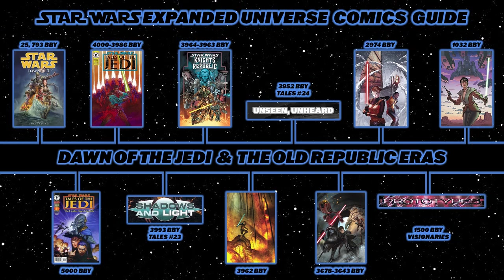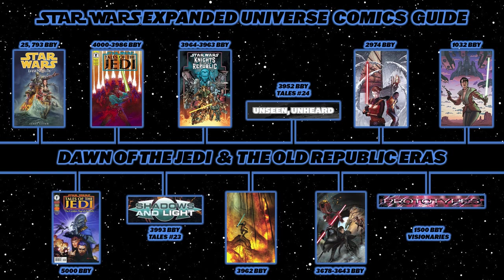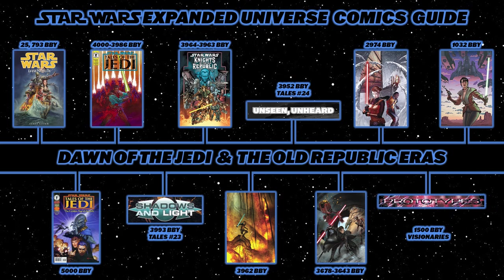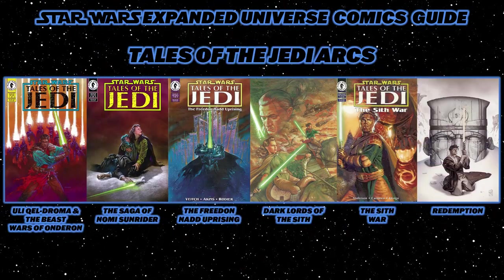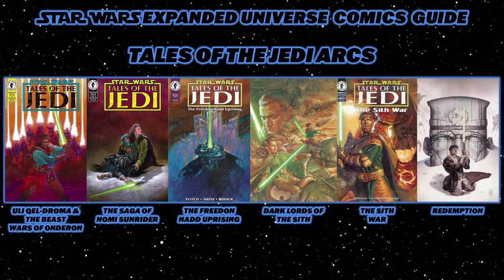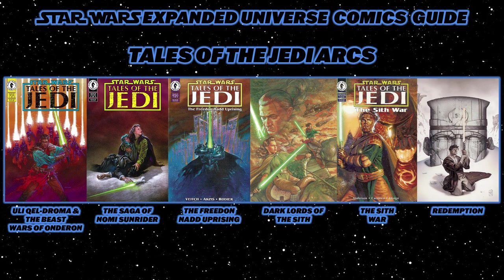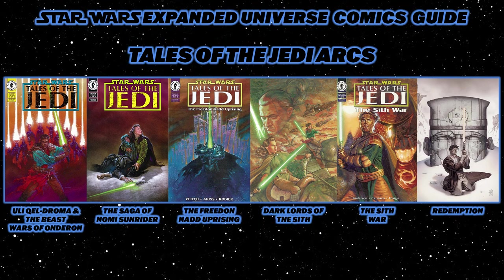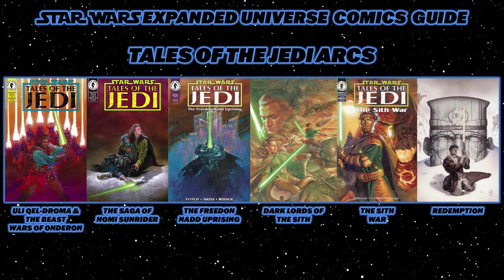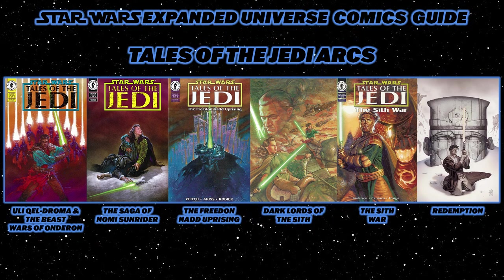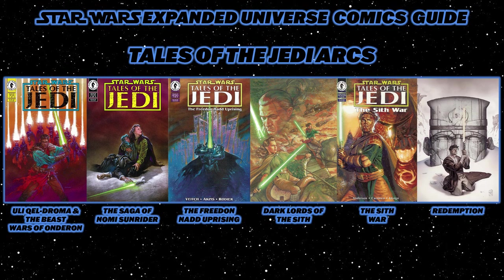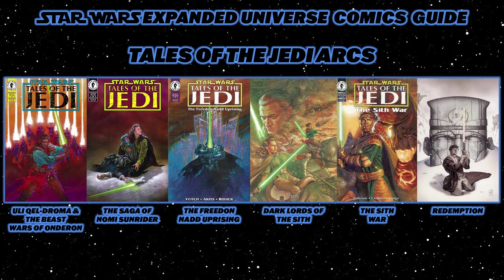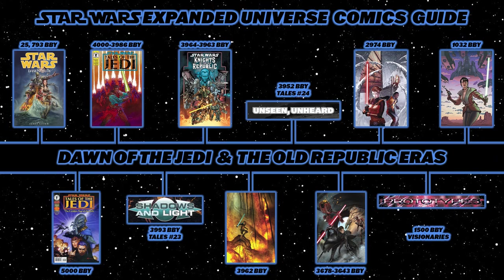Next, jump a thousand years to 4,000 BBY for the main Tales of the Jedi series, spanning from 4,000 to 3,986 BBY. It begins with Ulic Qel-Droma and the Beast Wars of Onderon, then the Saga of Nomi Sunrider, Freedom Nadd Uprising, Dark Lords of the Sith (six issues plus a zero-issue special), The Sith War (six issues), and concludes with Redemption over five issues.